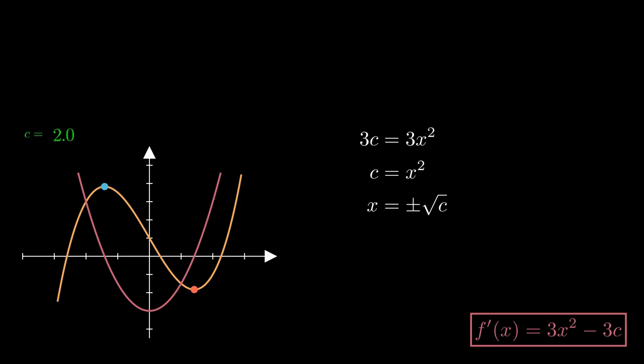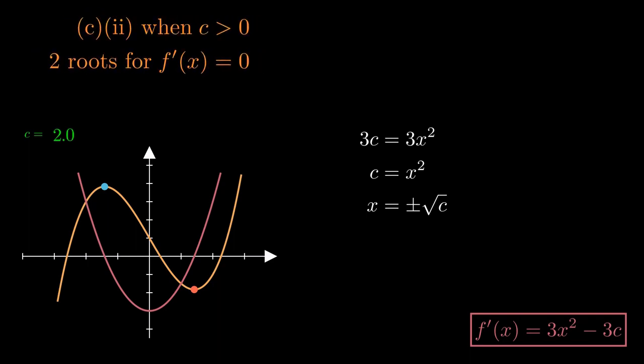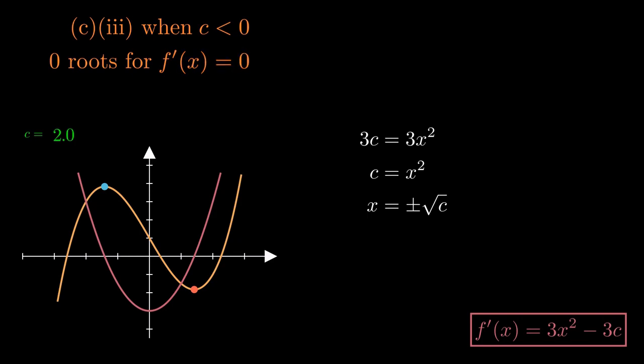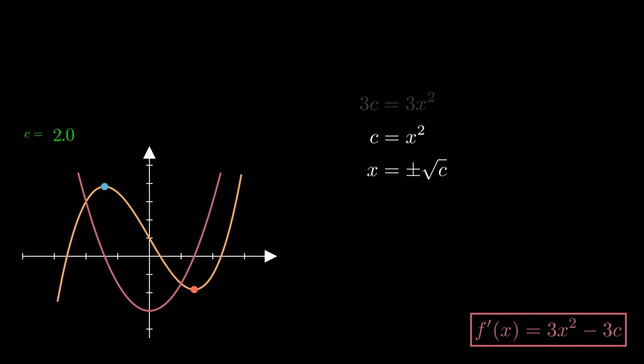In summary: C1 is when c = 0 — a point of inflection with zero gradient. C2 is when c > 0 — the first derivative has two roots, so the function has a local maximum and minimum. C3 is when c < 0 — the derivative is always positive, no turning points. Hopefully the graphs give you intuition and the algebra is straightforward.